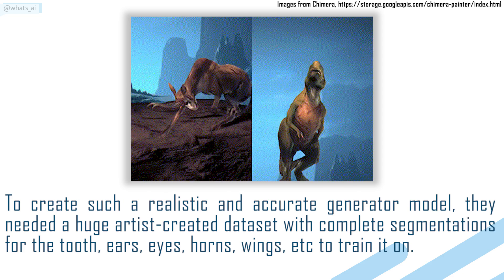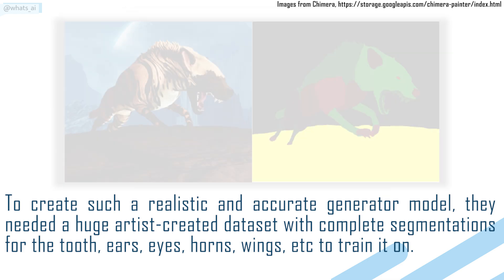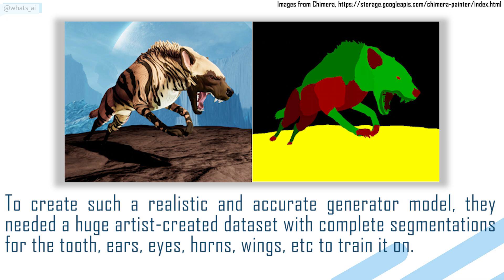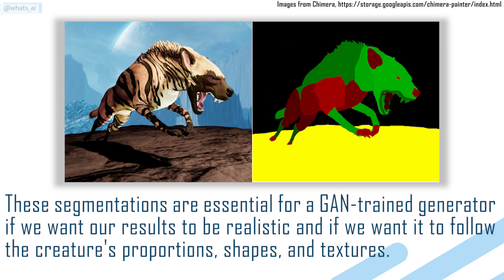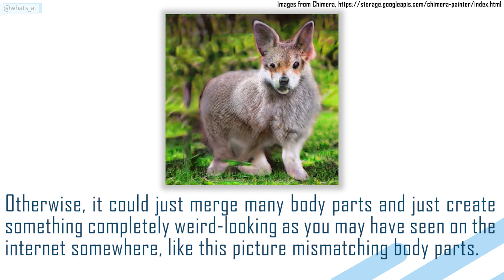To create such a realistic and accurate Generator model, they needed a huge artist-created dataset with complete segmentations for the teeth, ears, eyes, horns, wings, etc., to train it on. Each of the 10,000 or more training examples in the dataset is composed of two images: one with the fantastical creature results made by an artist, which is the expected output seen on the left, and another image with specific colors for each body part — which we call a segmentation map in computer vision — seen on the right, which is the model's input. These segmentations are essential for a GAN-trained generator if we want our results to be realistic and to follow the creature's proportions, shapes, and textures. Otherwise, it could just merge any body parts and create something completely weird looking, like a picture mismatching body parts, as you may have seen on the internet.